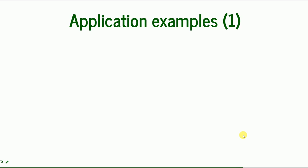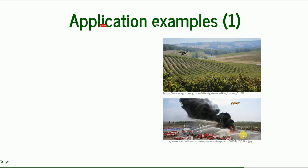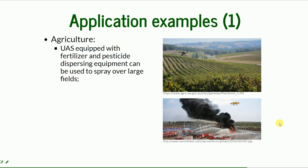I compiled some examples of general applications and then applications specifically for remote sensing, for collecting data remotely. In agriculture, the UAS can be equipped with fertilizer and pesticide dispersing equipment, and it can be used to spray over either large fields or can target specific areas where disease is present.